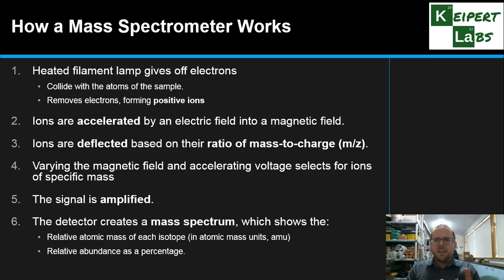And then this detector that's got this amplified signal creates a mass spectrum. That's the output, which shows two things in this situation. The first one is the relative atomic mass of each isotope in atomic mass units, which is the theoretical unit of measurement of something at the atomic scale. Whether it's 46 or 23 or 12 or whatever. Carbon 12 has an atomic mass of 12 atomic mass units, or AMU. So it shows the mass of the isotope.